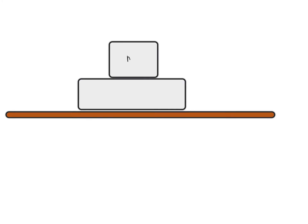Let's take another example: block m1 is on block m2, and the applied force is acting on m2. The applied force will try to decide the direction of motion. Because of force F, m2 will try to move towards the right, so this point moves right relative to a point on block m1. If friction is present, m1 exerts a frictional force F1 on m2 towards the left to oppose its motion, and m2 exerts an equal and opposite reaction force F1 on m1 towards the right.